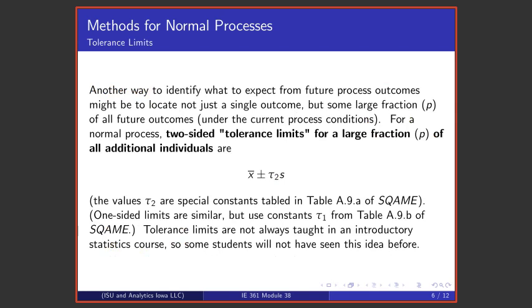Another way to view this is not as trying to locate the next observation from the distribution, but rather trying to locate some large fraction of the distribution or some large fraction of all future outcomes. We can do that if we assume that we're sampling from a normal process by taking the sample mean plus or minus an appropriate multiplier of the sample standard deviation, where that tau-2 figure is coming from a table in Vardaman and Jobe, and those constants tau-2 are made specially to capture certain fractions of the population with certain reliability.